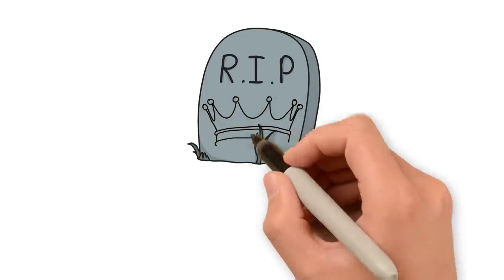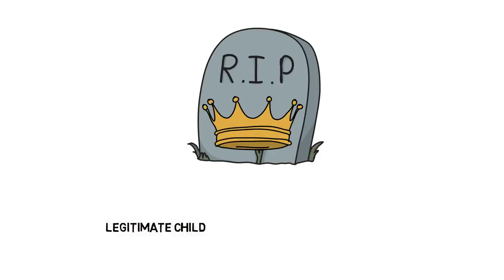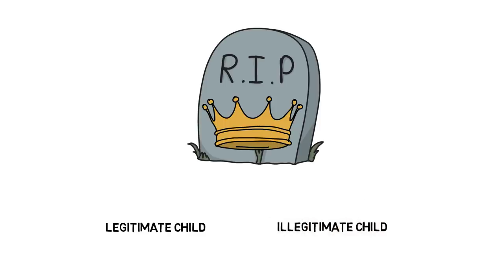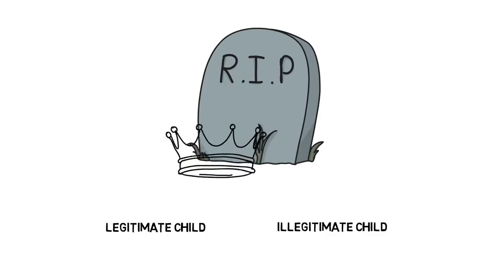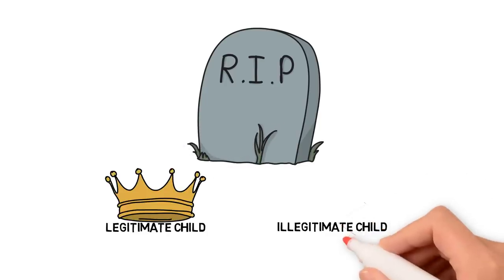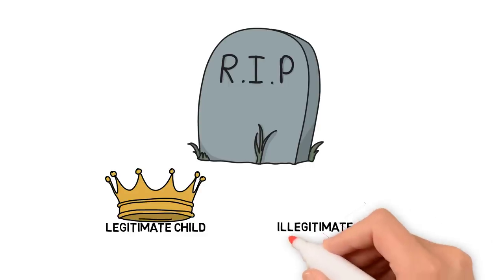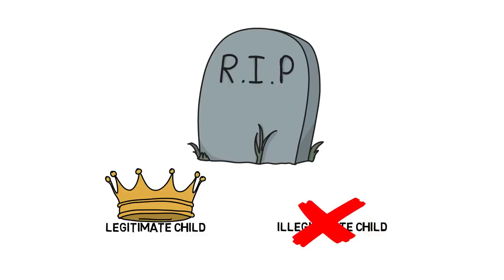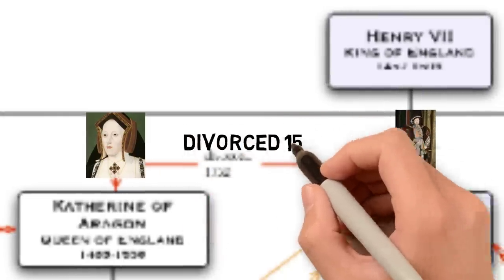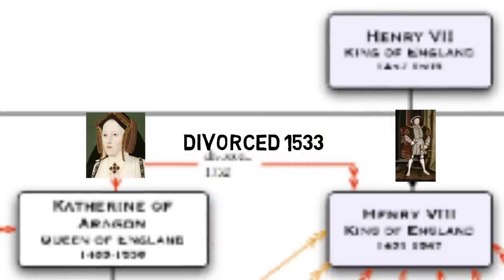This is really important in Tudor times: illegitimate children cannot inherit. They can't become king or queen and they can't receive any property from their father. So Henry Fitzroy, although he is made a duke and has many riches as Henry's son, can never become king. Simply put: if your parents are married, you are legitimate; if they are not, you are illegitimate.